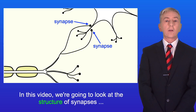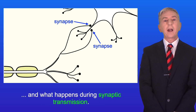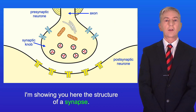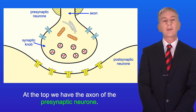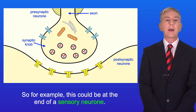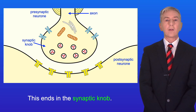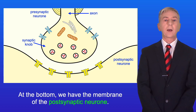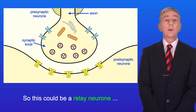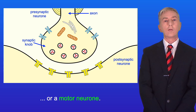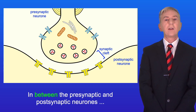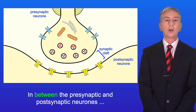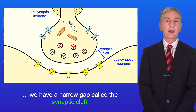In this video we're going to look at the structure of synapses and what happens during synaptic transmission. Here is the structure of a synapse. At the top we have the axon of the pre-synaptic neuron — for example, this could be at the end of a sensory neuron. This ends in the synaptic knob. At the bottom we have the membrane of the post-synaptic neuron, which could be a relay neuron or a motor neuron. In between the pre-synaptic and post-synaptic neurons we have a narrow gap called the synaptic cleft.